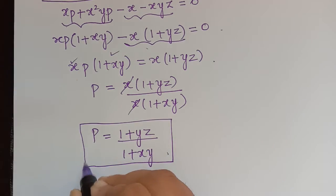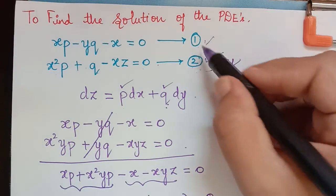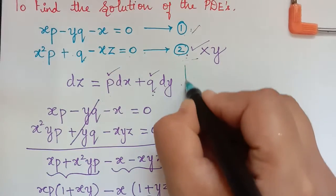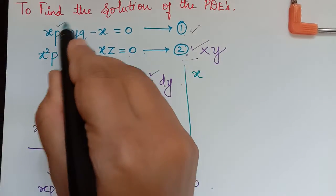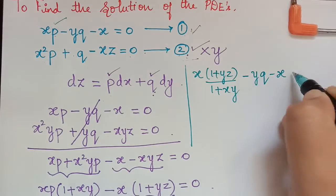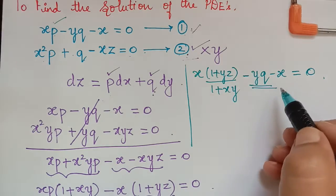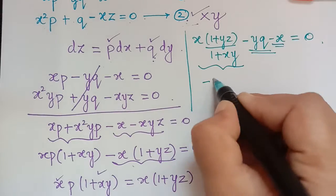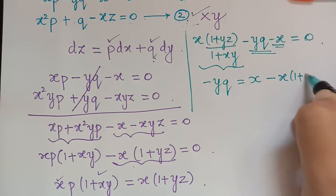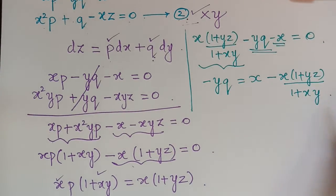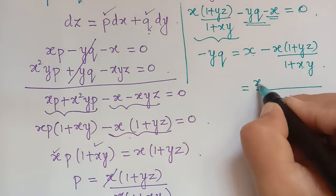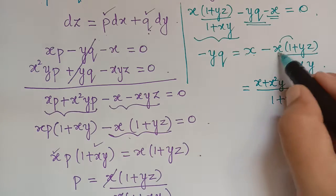Now we substitute this value of P in equation 1. So X multiplied with P = (1 + YZ)/(1 + XY), minus YQ minus X = 0. We take the two terms to the right: minus YQ = X minus X(1 + YZ)/(1 + XY). Taking (1 + XY) as LCM on the right gives: X(1 + XY) minus X(1 + YZ) all over (1 + XY), which expands to X + X²Y minus X minus XYZ.